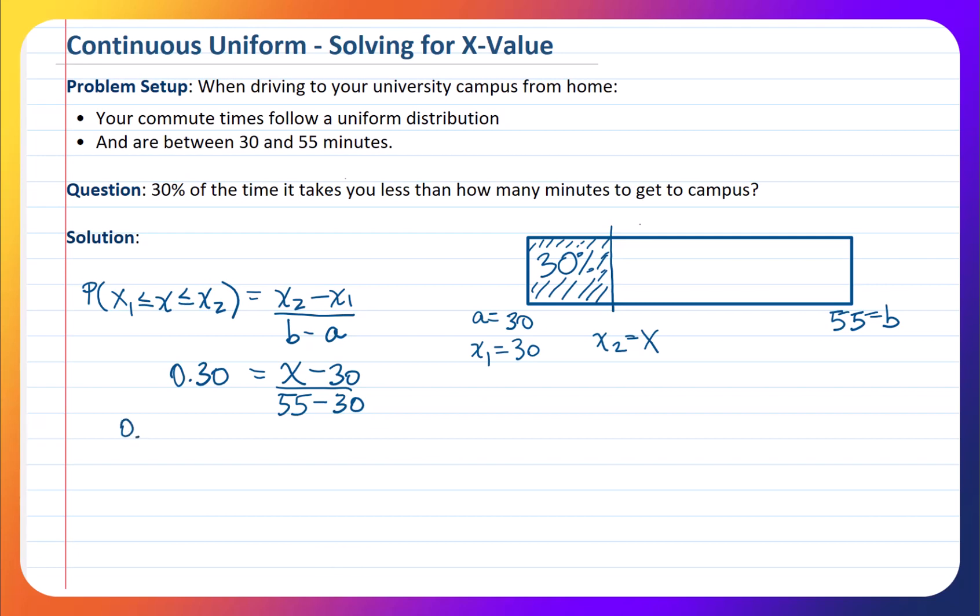So this ends up giving us 0.3 when we cross multiply here. We'll times the 0.3 by the 55 minus 30. That ends up giving us the following: that 0.3 times 55 minus 30 gives us X minus 30. And so 0.3 times 55 minus 30 gives us 0.3 times 25 and X minus 30.